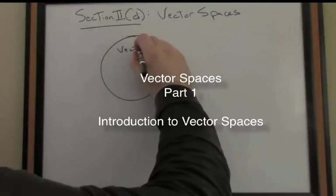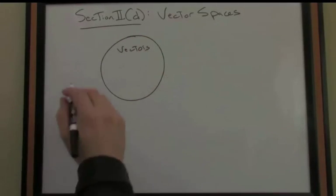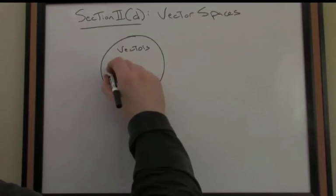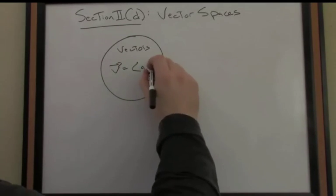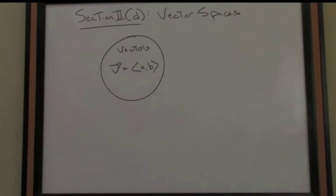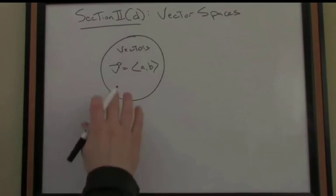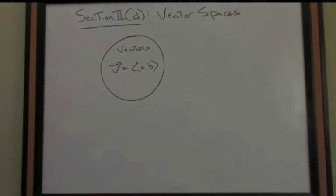A vector space consists of two sets of objects. A set of vectors, so we can think of a vector v. A vector v is just an object with a length and direction, or magnitude and direction. We can think of maybe a two-dimensional vector, the set of all those vectors.